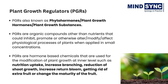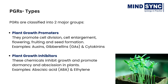Plant growth regulators are hormone-based chemicals used to modify plant growth such as increasing branching, suppressing shoot growth, increasing return bloom, removing excess fruit, or altering fruit maturity. They can be broadly classified into two categories: plant growth promoters and plant growth inhibitors. Promoters help in the growth of plants by promoting cell division, cell enlargement, flowering, fruiting, and seed formation. Inhibitors restrict the process of growth and promote dormancy and abscission in plants. Auxins, gibberellins, and cytokinins are grouped into plant growth promoters, while abscisic acid and ethylene are grouped into plant growth inhibitors, though ethylene can act as either a promoter or inhibitor.